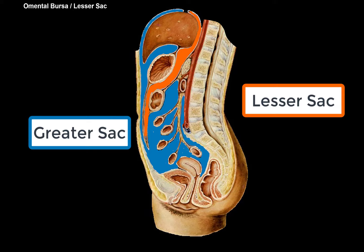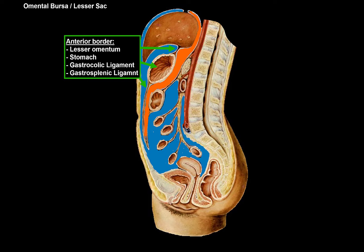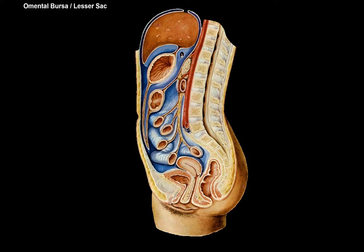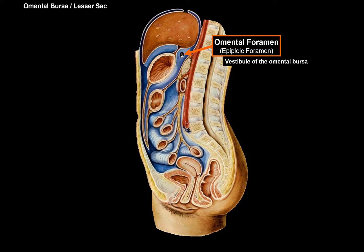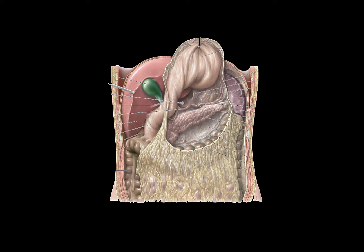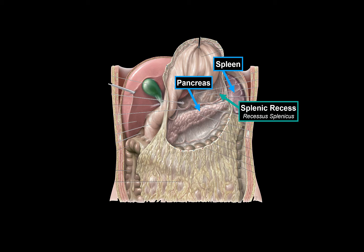The lesser sac is separated from the greater sac. Its borders are: the lesser omentum, stomach, and the gastrocolic and gastrosplenic ligaments of the greater omentum anteriorly; the transverse colon and transverse mesocolon inferiorly; the liver superiorly; and the parietal peritoneum posteriorly. These two sacs communicate through the omental foramen, also called the epiploic foramen, bordered by the vestibule of the omental bursa. Within the lesser sac we find the superior recess, the inferior recess, and — lifting up the stomach to see the spleen and pancreas — the splenic recess next to the spleen.